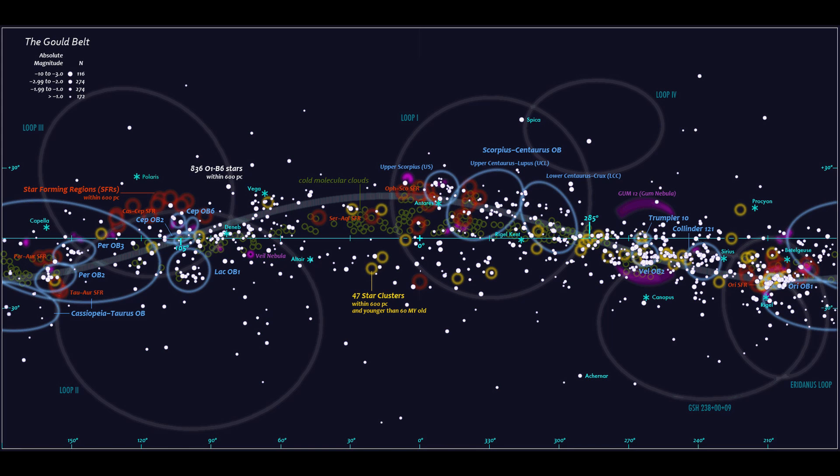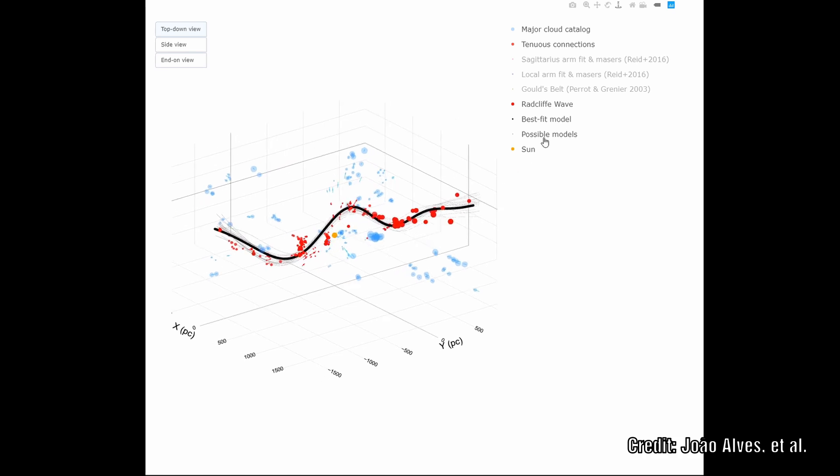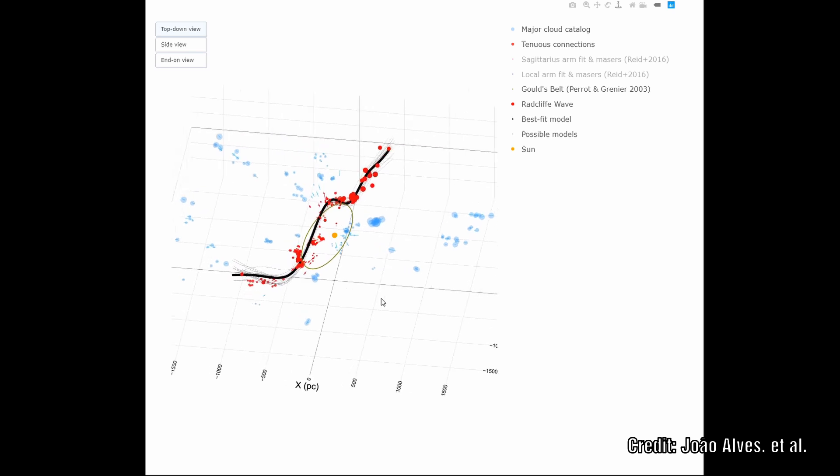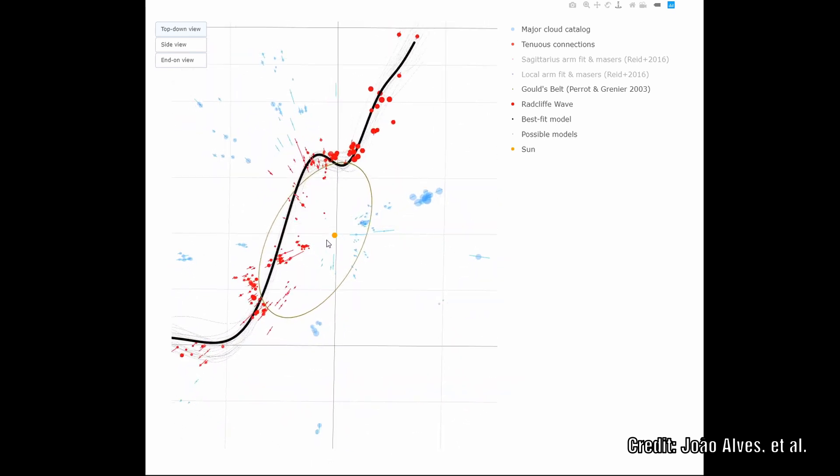Being able to map structures in our neighborhood is extremely difficult as we sit inside these structures. This new study claims that the old mapping of the Gould Belt is incorrect, and it does not form a ring at all, but instead forms a gigantic wave pattern that follows our local spiral arm.